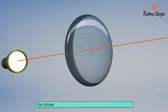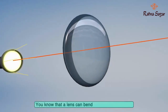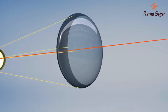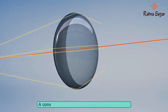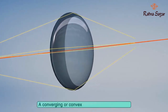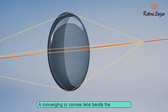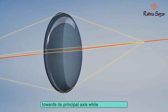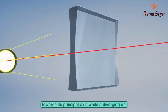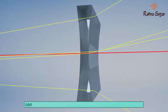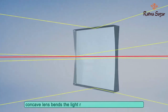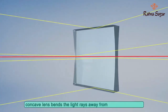A converging or convex lens bends the light rays towards its principal axis after refraction, while a diverging or concave lens bends the light rays away from the principal axis.